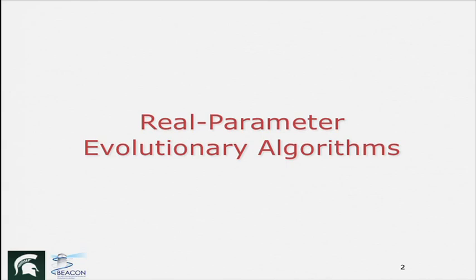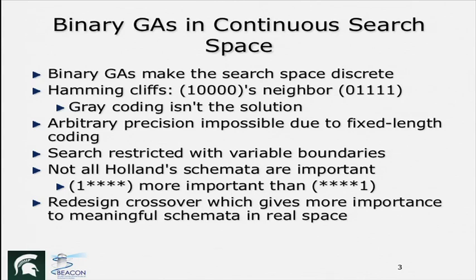Now we will talk about directly dealing with real parameter optimization problems where you do not need the binary coding; you can straight away use a GA concept to deal with real parameters. This has started after the binary coded GAs have been developed. There are some algorithms motivated by how binary coded GAs work, and by studying those things they came up with methodologies for real parameter evolution algorithms. I am going to talk about a few of those. First I will start with real parameter GA.